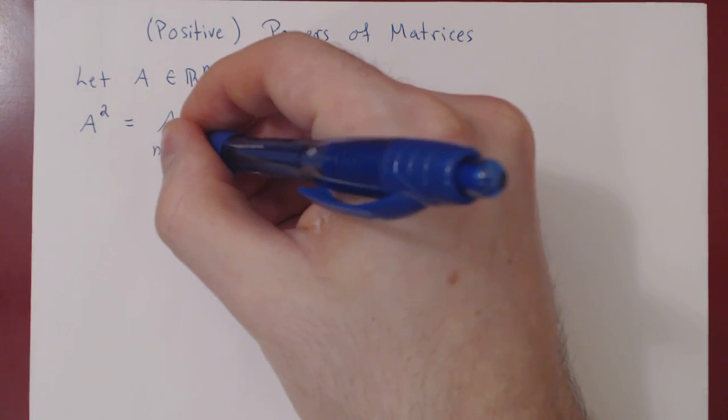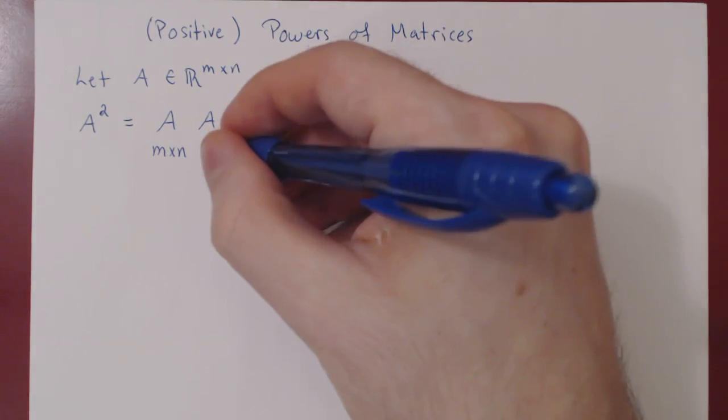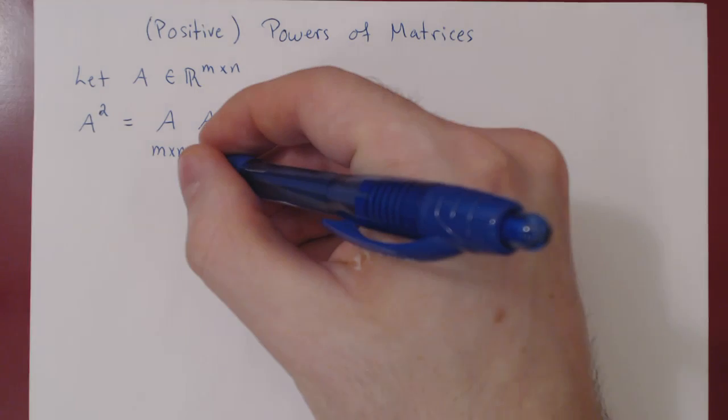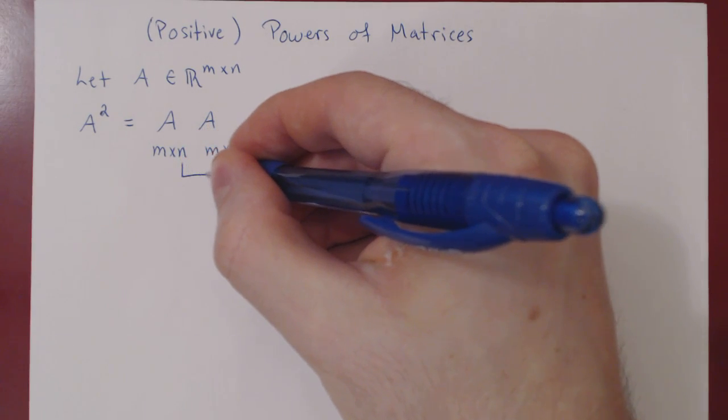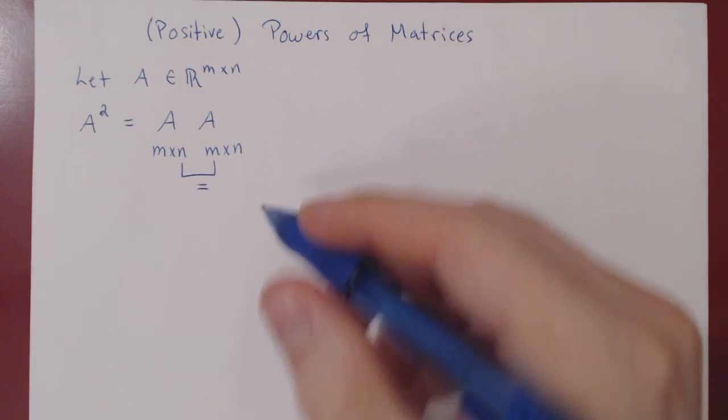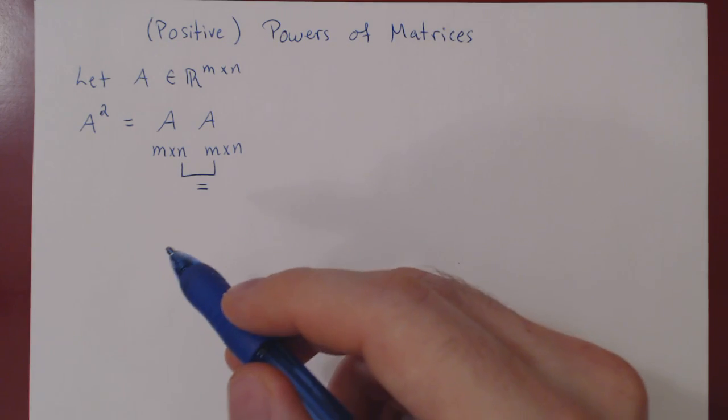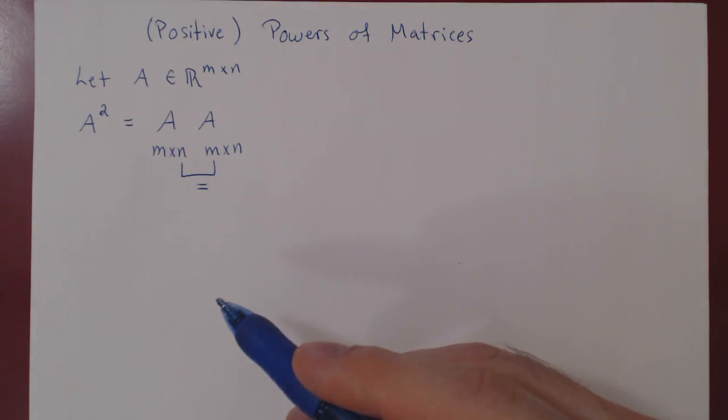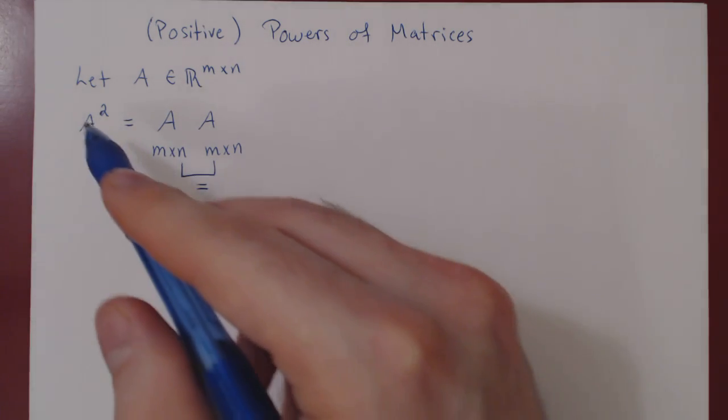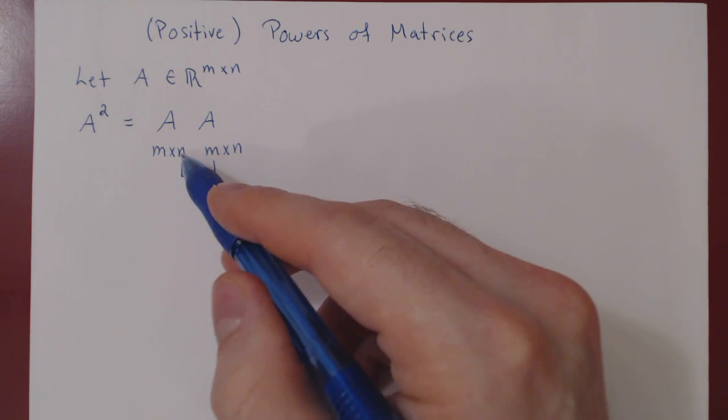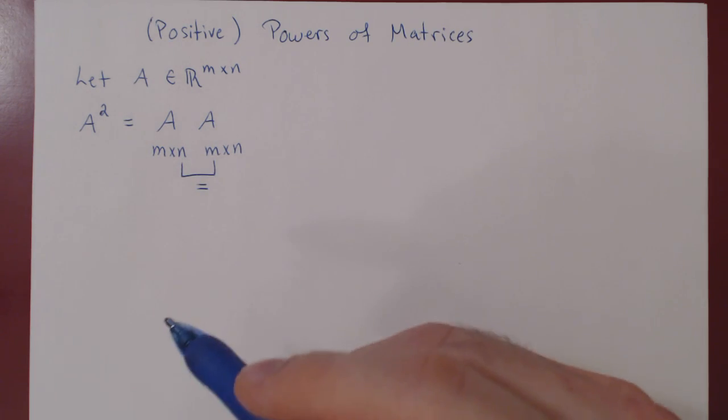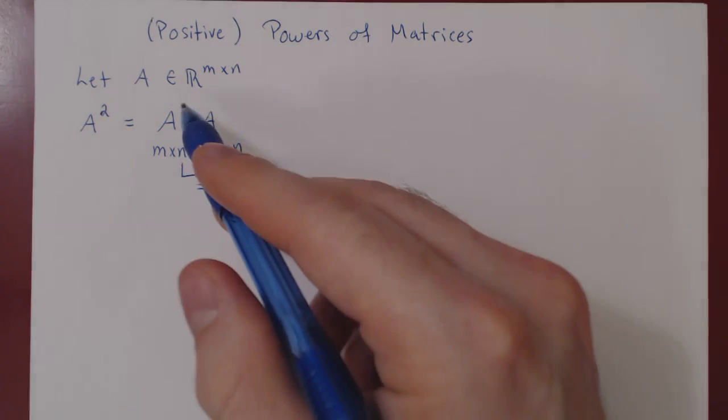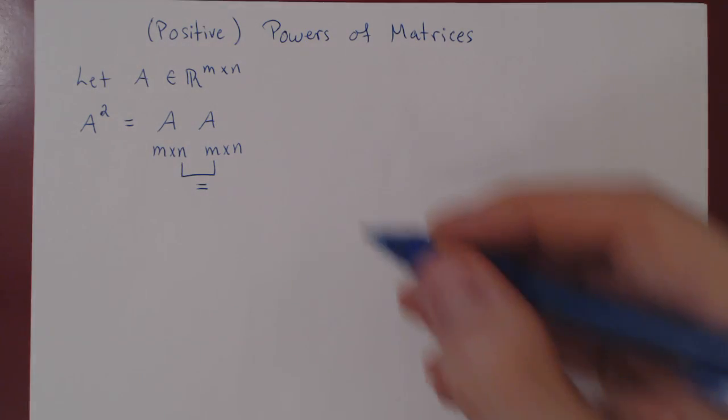Well, A is an m by n matrix, and the only way for A times A to be defined, if n equals m. If n is not equal to m, then the multiplication does not exist, and we cannot compute A squared. And so you see, the only way for A squared to exist, is for n to equal m, and so to have the same number of rows as we have columns. So we can only take powers of square matrices.